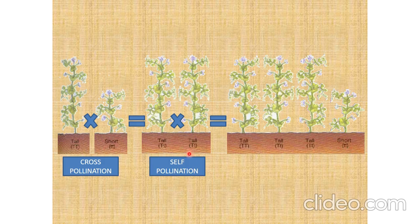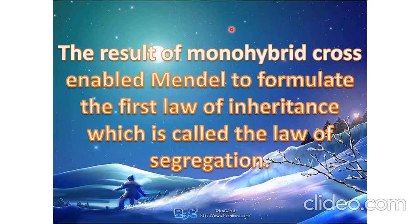We got three tall plants and one short plant. See here, tall is TT, and when it is Tt, it is also tall because the dominant trait expresses itself in the presence of the recessive trait also. This plant is also tall, and this is short.